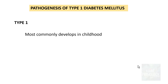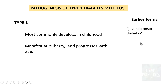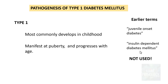Type 1 diabetes most commonly develops in childhood, manifests at puberty, and progresses with age. Earlier it was referred to as juvenile onset diabetes and also as insulin dependent diabetes mellitus. But now it is shown that these two terminologies are incorrect, because this can also occur in adults and need not always be insulin dependent. So these two terminologies are no longer used.